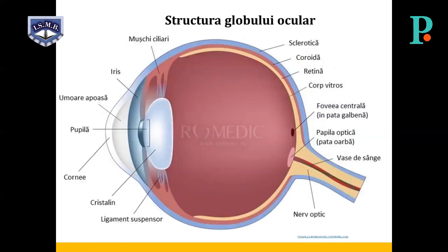Structura globului ocular: globul ocular, de formă sferică, ocupă partea anterioară a orbitei, fiind alcătuit din trei învelișuri suprapuse sau tunici, patru medii transparente care formează sistemul dioptric și sistemul receptor alcătuit din retină. Învelișurile globului ocular sunt: tunica externă — sclerotica și cornea transparentă; tunica medie vasculară — coroida în partea posterioară, corpul ciliar și irisul; tunica internă reprezentată de retină, sistemul fotosensibil al globului ocular.